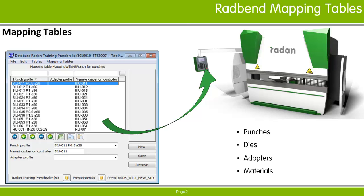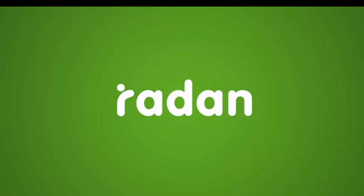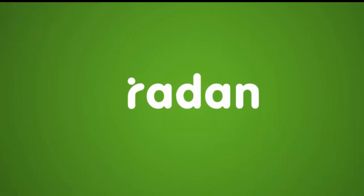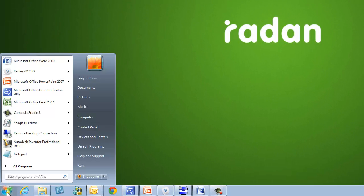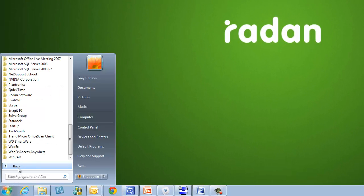The tool and material database editor can be accessed from within Radband or through the standalone application option from the Windows Start menu. The standalone tool database editor is found in the Radband software folder of the Windows menu.